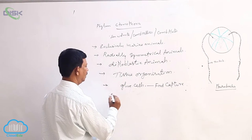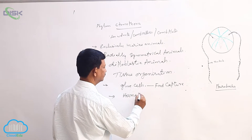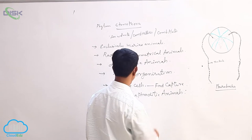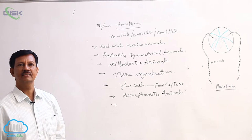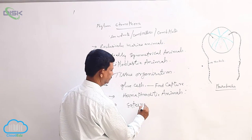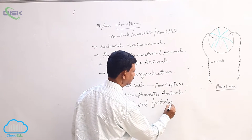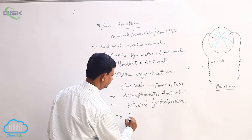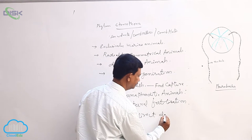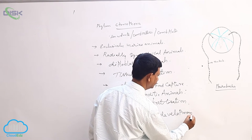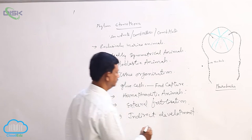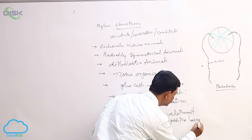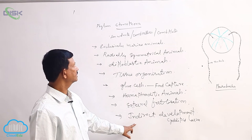These are hermaphroditic animals. Development is indirect. Development includes the cydippid larva. Cydippid larva is present in the life history of ctenophorans.